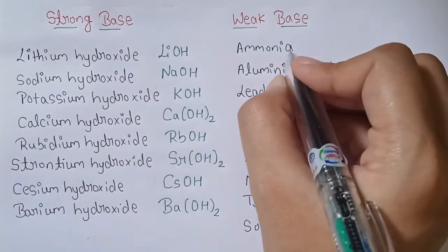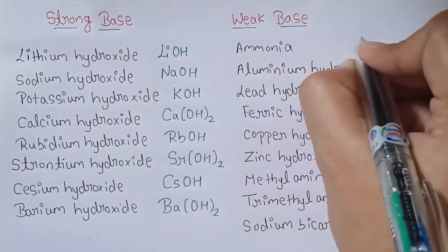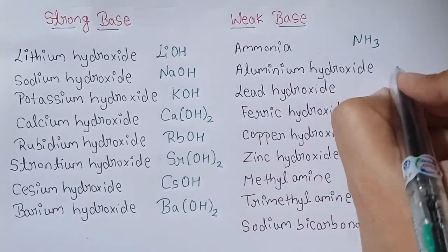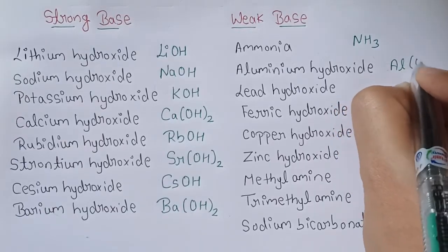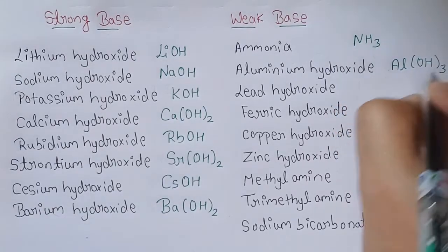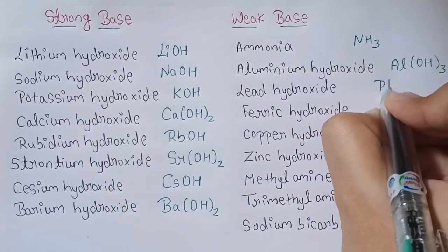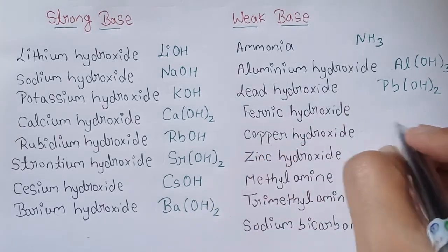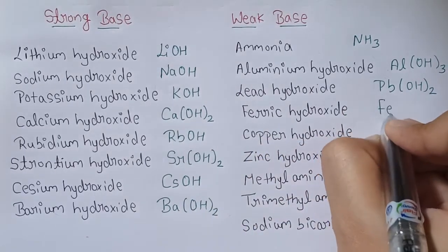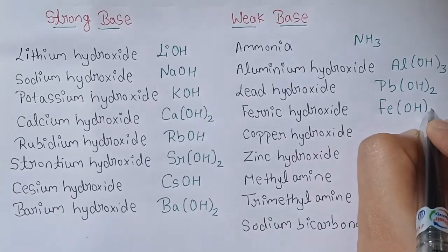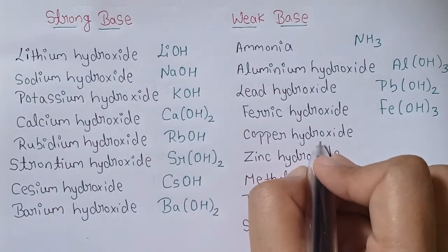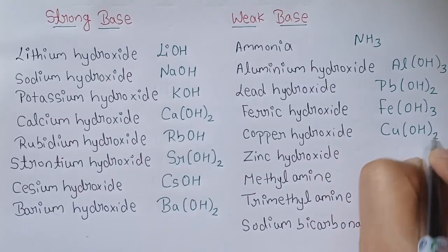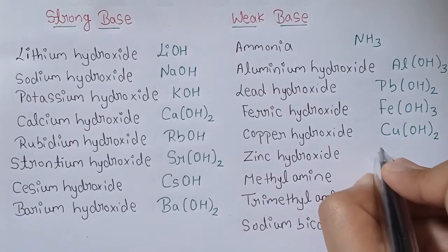Weak bases: first is ammonia (NH3), then aluminum hydroxide (Al(OH)3), lead hydroxide (Pb(OH)2), ferric hydroxide (Fe(OH)3), and copper hydroxide (Cu(OH)2).